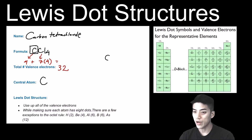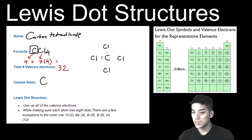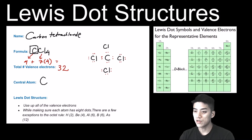I'll put carbon right at the center and surround it with four chlorines, evenly spaced and symmetrical. I'll then place eight dots on carbon — two shared with each chlorine. Continuing to place dots on each chlorine as lone pairs, I use up all 32 electrons total. So we've satisfied the first condition: all 32 valence electrons are used up.